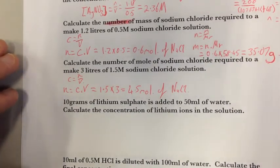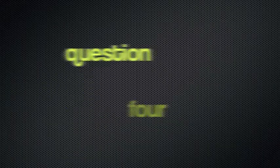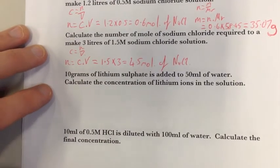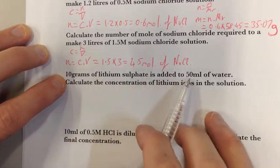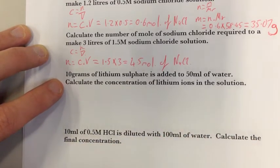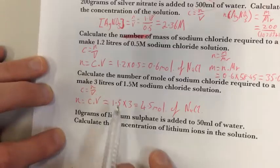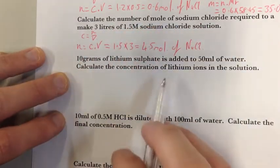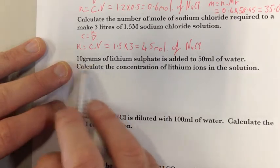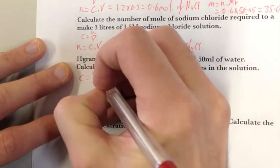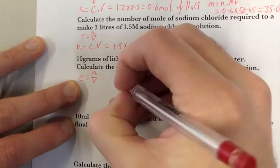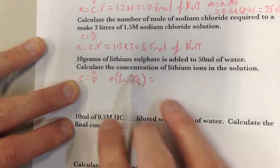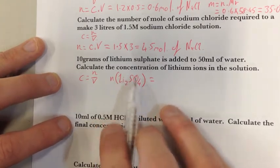Read the questions — really important. Let's look at the last one. My last problem: 10 grams of lithium sulfate is added to 50 ml of water. Calculate the concentration of lithium ions in the solution. So I write C equals N over V, and I need to find my number of moles first. I'm going to write number of moles of Li₂SO₄, because this is going to be really important later on — I want to know exactly what I'm calculating the moles of.